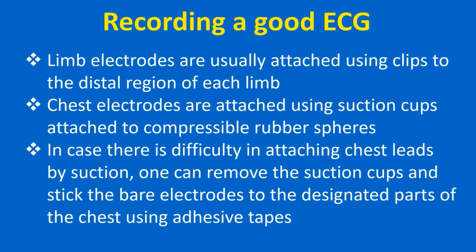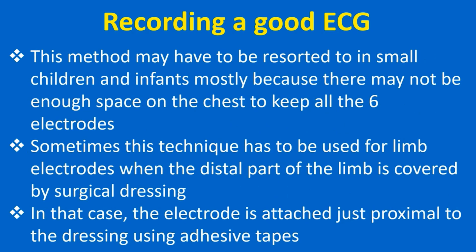In case there is difficulty attaching chest leads by suction, one can remove the suction cups and stick the bare electrodes to the designated parts of the chest using adhesive tapes. This method may have to be used in small children and infants, mostly because there may not be enough space on the chest to keep all six electrodes. Sometimes this technique also has to be used for limb electrodes when the distal part of the limb is covered by surgical dressing — in that case, the electrode is attached just proximal to the dressing using adhesive tapes.